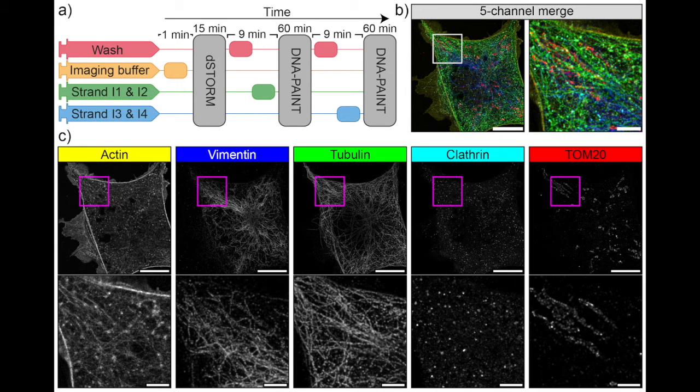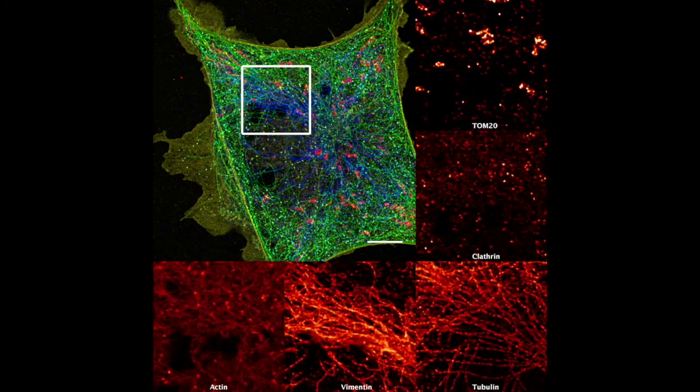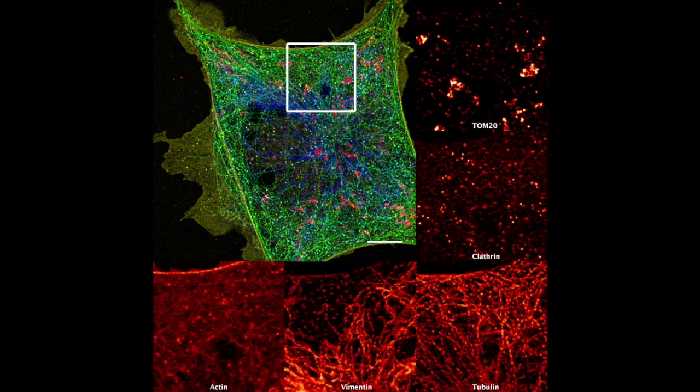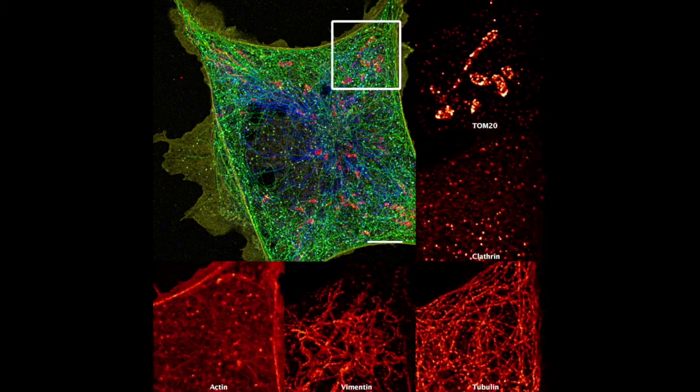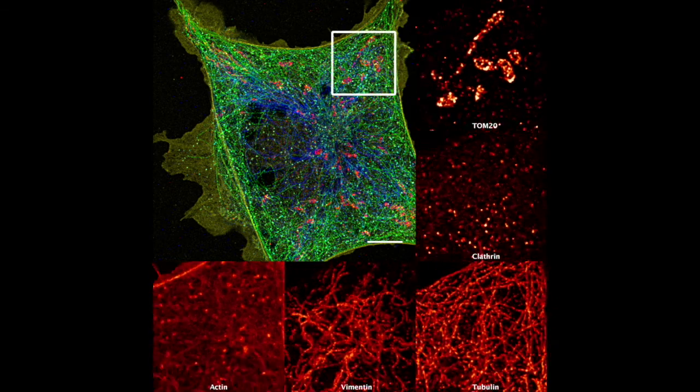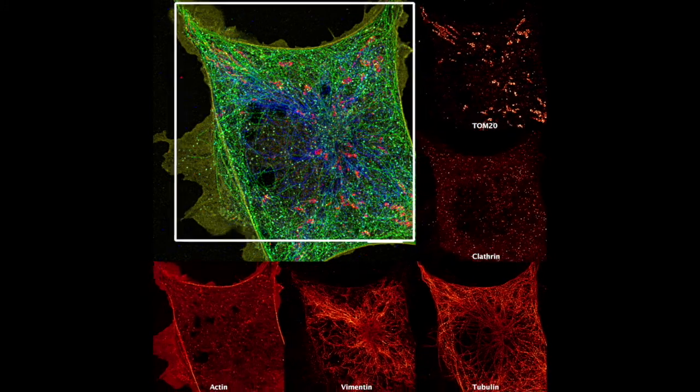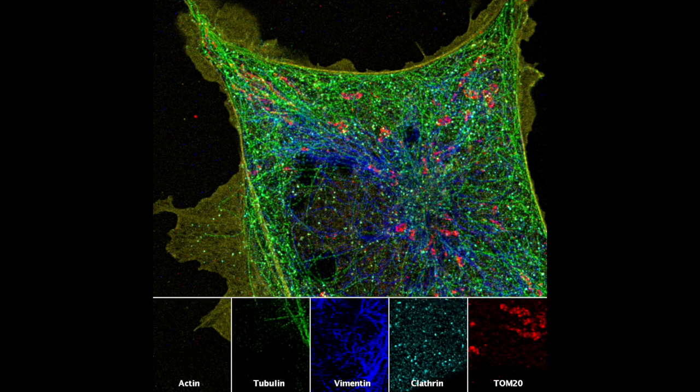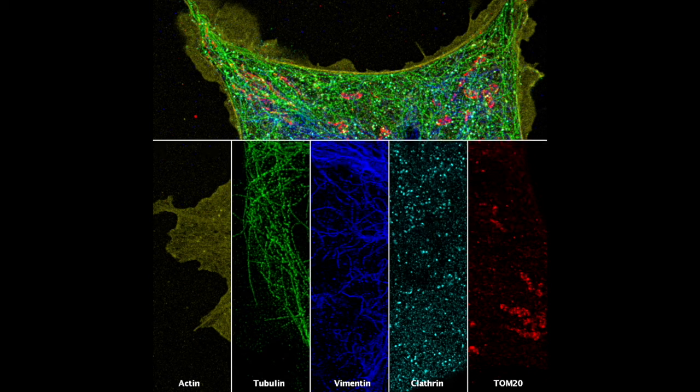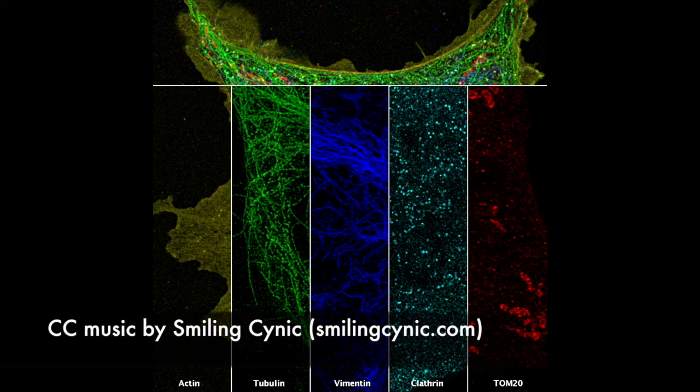Once the cell is fixed, we can use Pumpey for sequential labeling and observe a large number of different proteins. Here, we stain the actin cortex and imaged it by storm. Next, we bleach out the storm label. Pumpey then dynamically labels mitochondria and vimentin using DNA paint. It then removes these labels and re-labels for clathrin and tubulin. The number of different protein types you can image is theoretically unlimited.